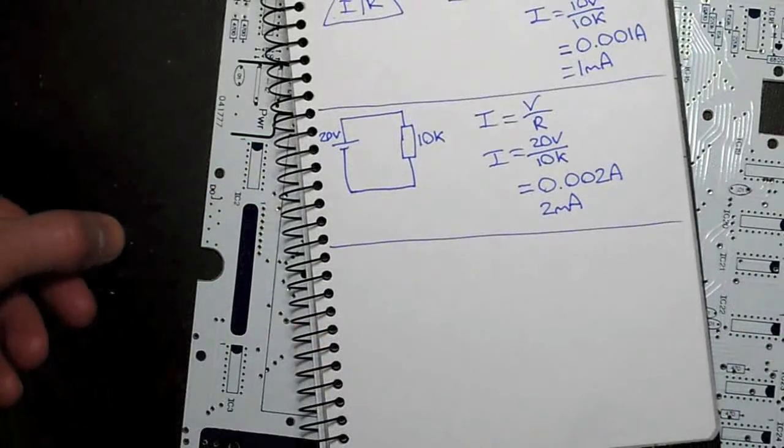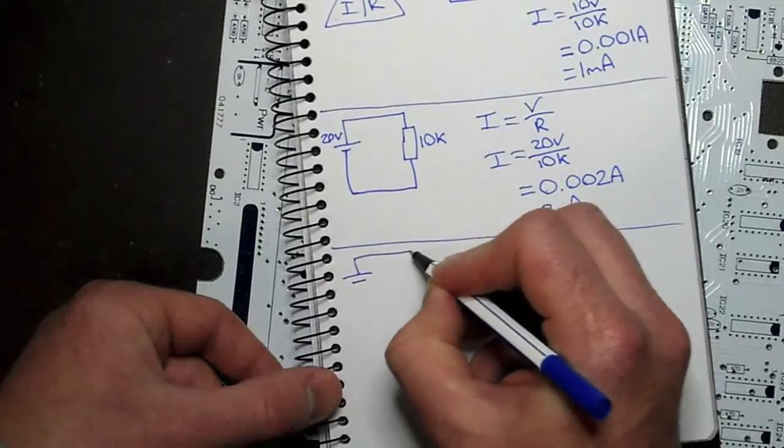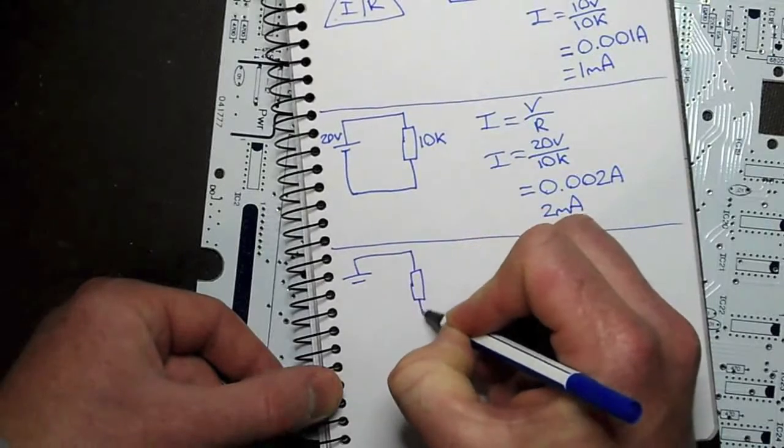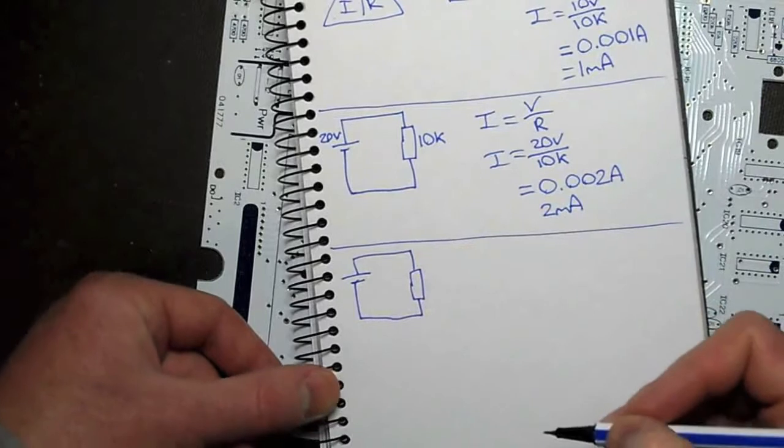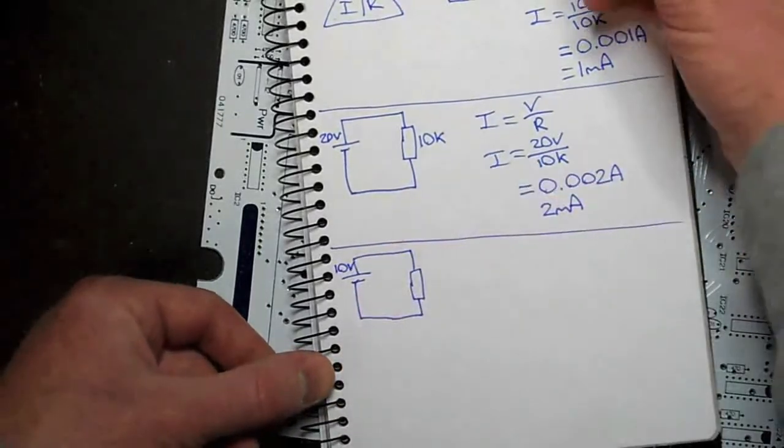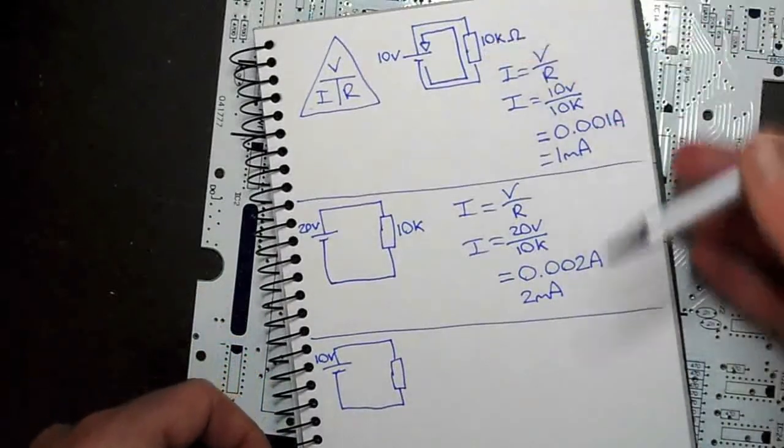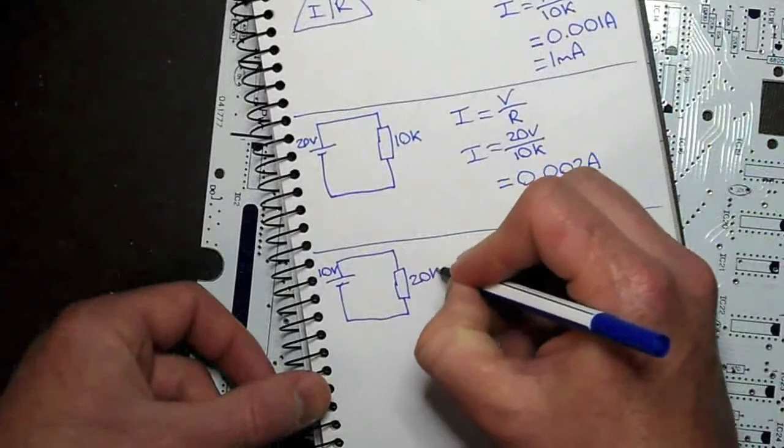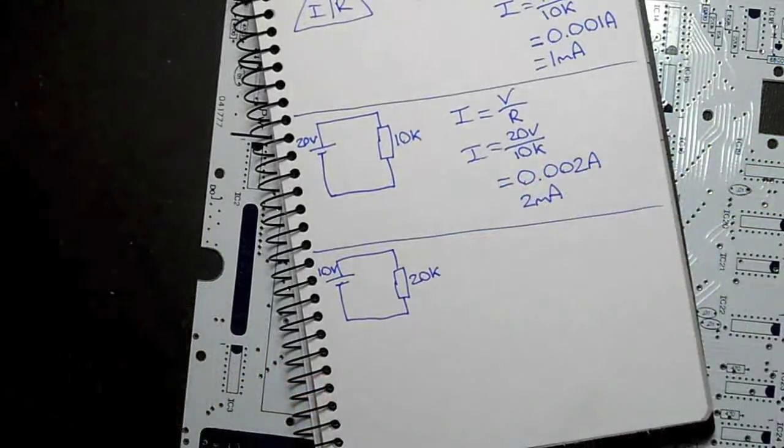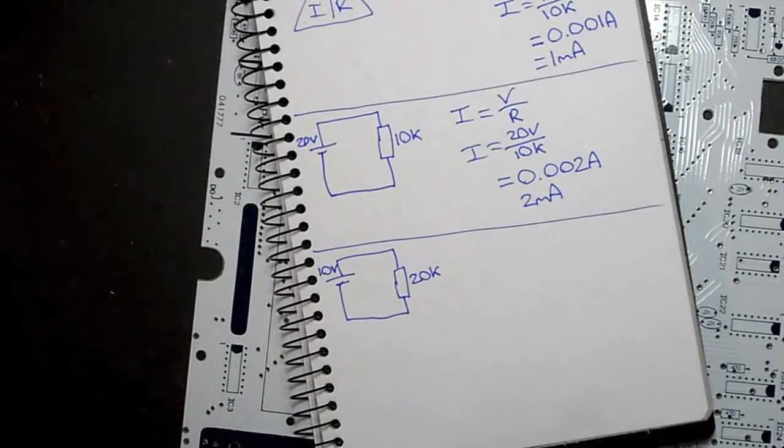I also said that current was inversely proportional to resistance. Again, same circuit. One resistor, one power supply. Let's go back to 10 volts. We're using our original voltage, 10 volts, but now let's increase the resistor to 20K. We now have twice as much resistance in the circuit. It would make sense that the current would halve.